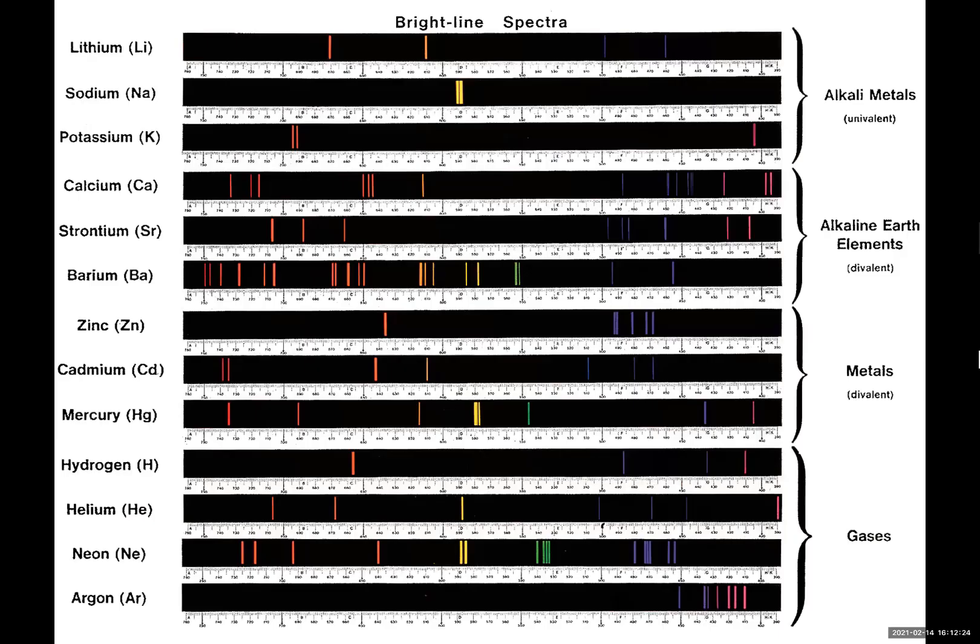This was another problem they had to answer. How come every element is showing its own characteristic line spectrum? And what is this telling us about the structure of the atom? You see alkaline metals showing this spectrum, alkaline earth metals this line spectrum, and every metal and gas showing their own specific line spectrum.